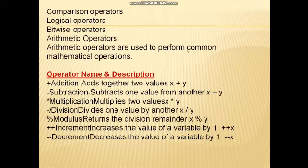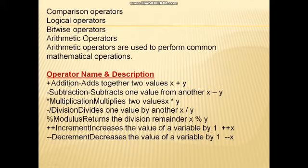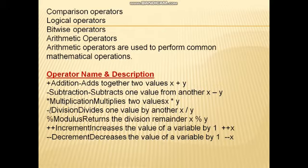Arithmetic operators are used to perform common mathematical operations — they perform mathematical calculations. The first arithmetic operator is plus, which is addition — it adds together two values, for example x plus y. Second is minus, subtraction — it subtracts one value from another, x minus y, meaning y is subtracted from x. Third is multiplication — multiply two values, x multiplied by y. Fourth is division — divides one value by another, represented by a backslash: x backslash y, meaning x divided by y.